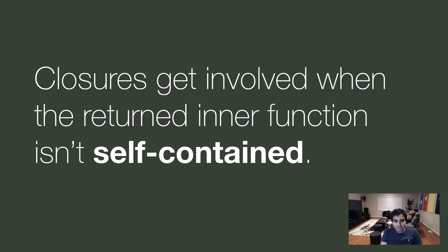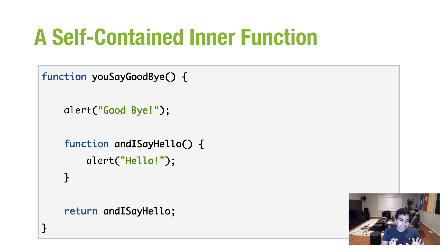Now, where do closures come into play? So far we've looked at a function returning a value and a function returning a function. So closures get involved when the return inner function isn't self-contained. Now, there's a lot of jargon and you'll see what it means when I get to the example that kind of highlights this more clearly. So, in this case, what we have is an outer function, youSayGoodbye, inner function andISayHello. Now, the inner function andISayHello is considered self-contained because notice what it has here. We have the alert hello and there's nothing this function is doing, nothing in its day-to-day operation that requires a value or some input from the outer function.